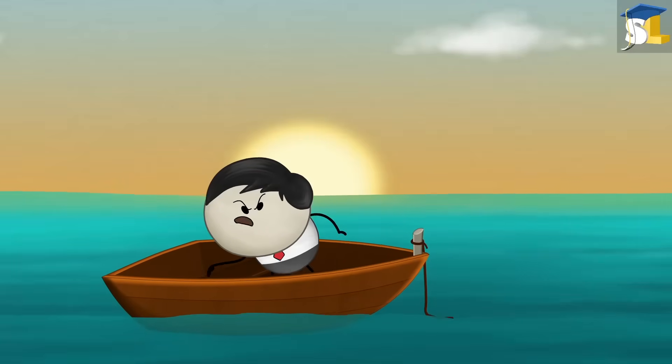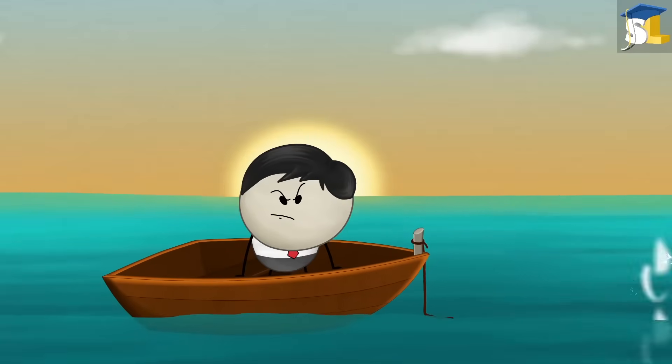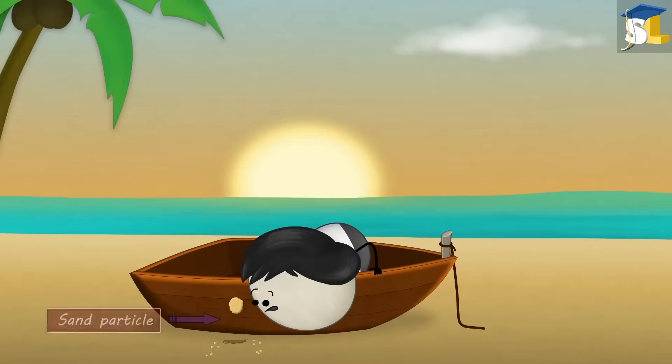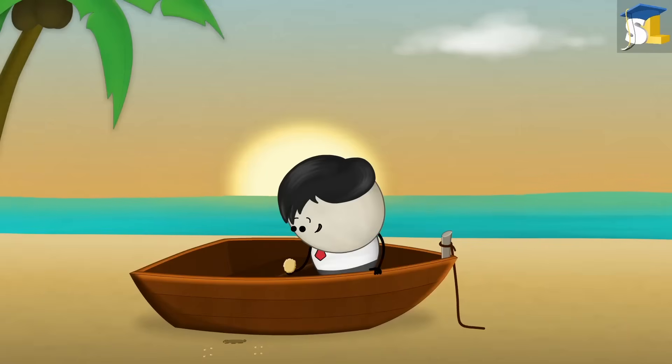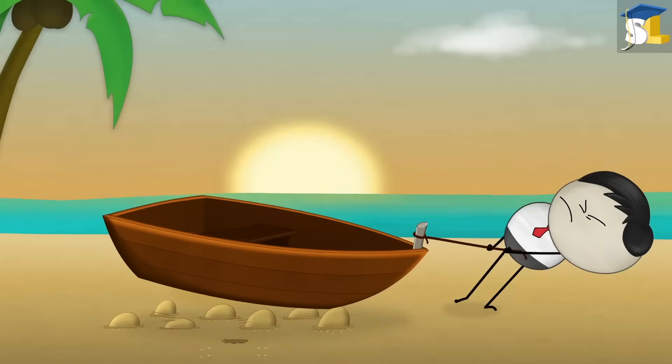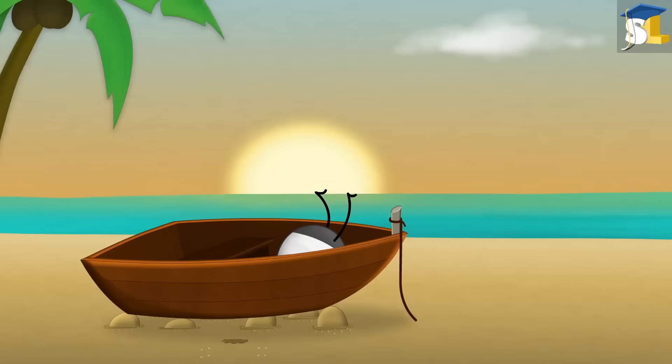Rough textures or surfaces offer greater friction as compared to smooth textures or surfaces. Do you want to say that my brand new boat has a rough texture? No. Even though the texture of the boat is almost smooth, the small particles of sand present on beach form a rough surface. Hence, when we pull the boat on beach, the sand particles offer greater friction and oppose the motion of the boat, thus making it difficult to move the boat on the beach.